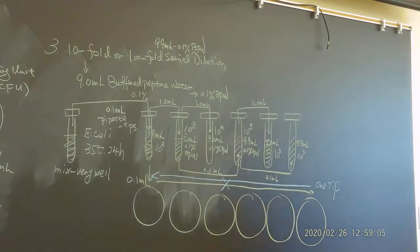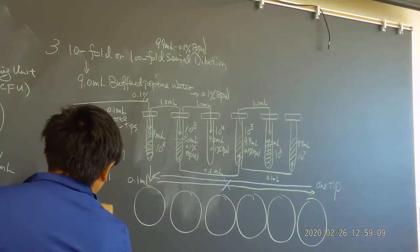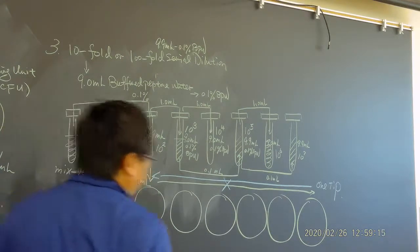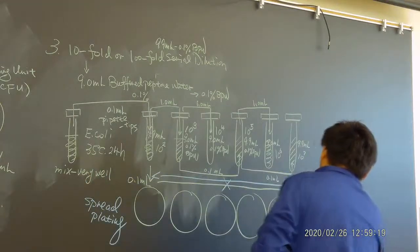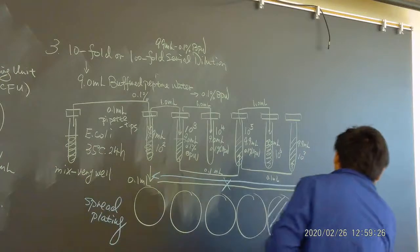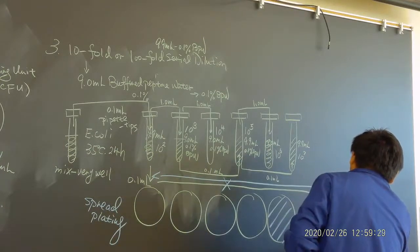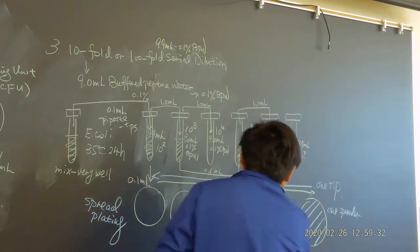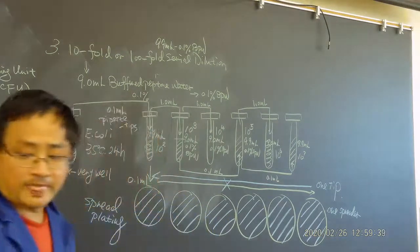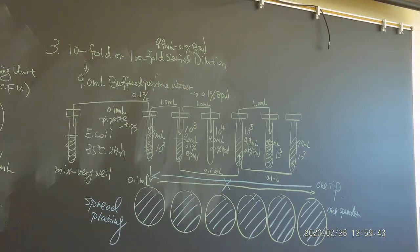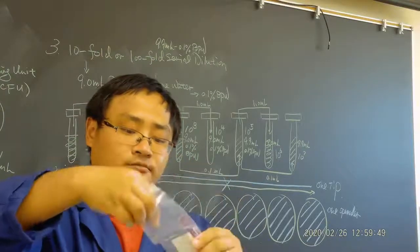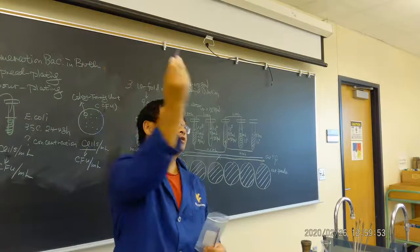For spread plating, you will use a spreader to spread the bacteria on the plate — again from highest to lowest dilution, using only one spreader. You spread, spread, spread, and then spread. The spreader is in front of your bench — I already showed you how to use it in the video.